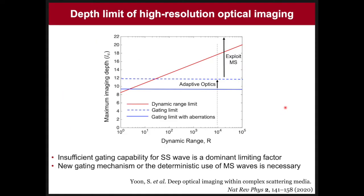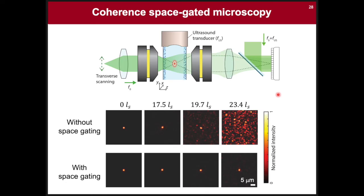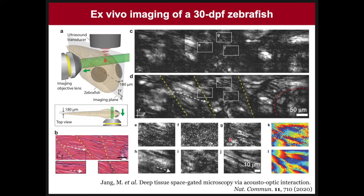To further increase the imaging depth, we need a new gating scheme. For that purpose, we developed a method called the space-gated microscope, which introduces an acoustic focus at the optical focus and selectively detects acoustically modulated optical waves using a frequency-shifted reference wave. Multiple scattered waves traveling outside the acoustic focus are rejected. With this new gating method, the optical focus could be recovered under conditions where conventional confocal imaging failed. We performed ex vivo imaging of a relatively mature zebrafish and visualized muscular structures invisible to conventional confocal imaging.